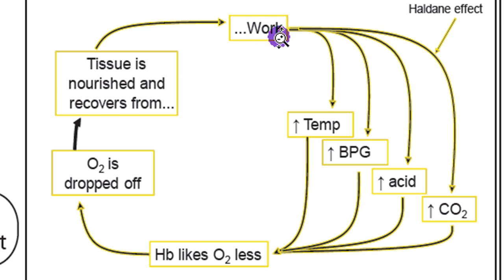Another effect of work in tissue is metabolites are increased. One of the main metabolites that affects hemoglobin is something called BPG. So if BPG goes up, hemoglobin likes oxygen less. Hemoglobin's affinity for oxygen decreases, and so we drop off oxygen, and that oxygen will nourish the tissue that's doing work.